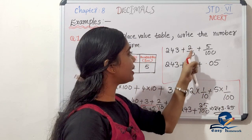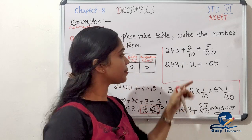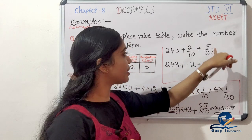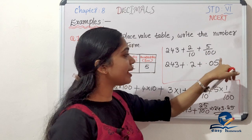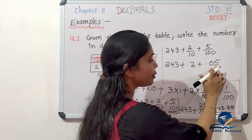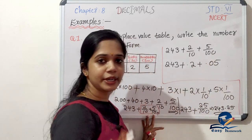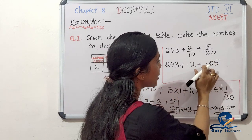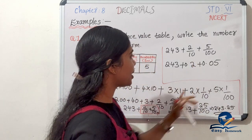If you have a denominator with two zeros, you place the decimal point two places from the right. So we get 0.25 as the decimal part.